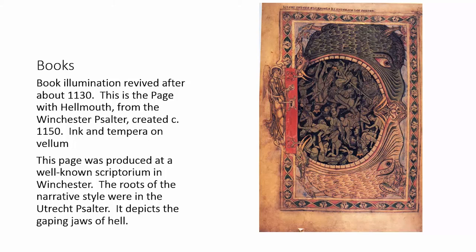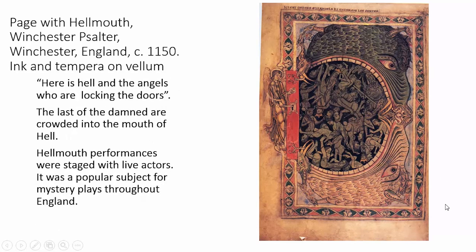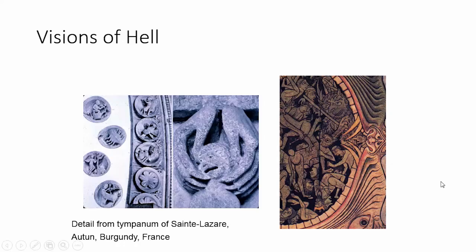After about 1130 we have a revival in book illumination. This is a quintessential example of the Hellmouth theme, which we saw in the Church of Saint-Lazare at Autun. This is the page with the Hellmouth from the Winchester Psalter, created around 1150, produced in a well-known scriptorium in Winchester. The roots of this style are in the Utrecht Psalter and the Reims School — very sketchy, animated figures. Here we see the gaping jaws of Hell with angels locking the door and pushing the last of the damned inside. Hellmouth performances with live actors were popular mystery plays throughout England at the time.